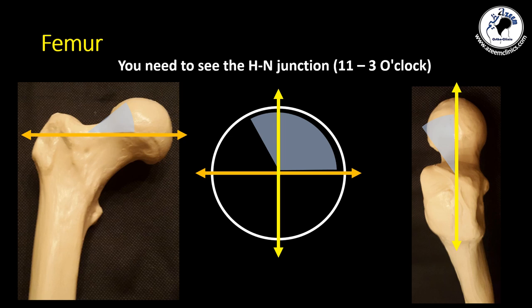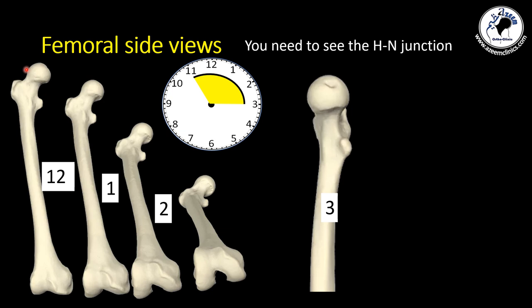To see this area, you have to center your beam at the head and neck junction in different positions of the femur. An AP view with internal rotation will show you twelve o'clock or eleven o'clock, which is the uppermost part of the head and neck junction. Starting to rotate and flex the femur will show more of the anterior part passing by one o'clock and then two o'clock, finally reaching the proper lateral position, which defines the most anterior part at three o'clock and the most posterior part at nine o'clock.